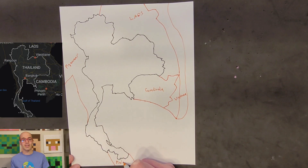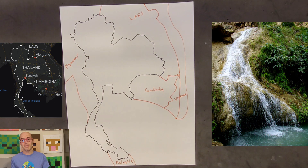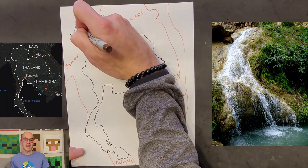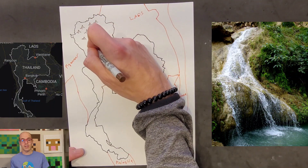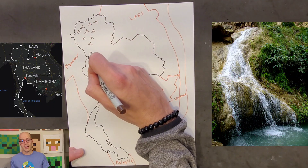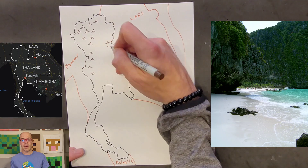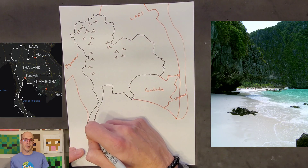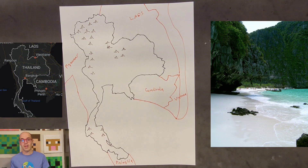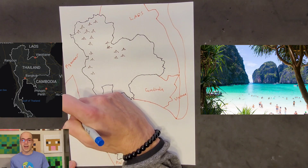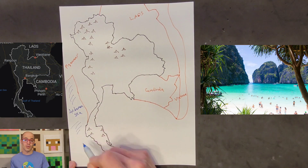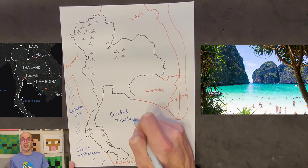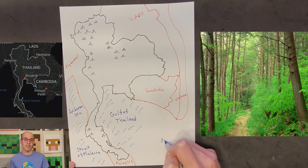In the north, the rugged terrain of the Thai highlands, including the mountain ranges of the Shan Hills and the Daen Lao range, dominate the landscape. In the south, Thailand's geography is defined by its stunning coastline, which stretches over 3,000 kilometers along the Gulf of Thailand to the east and the Andaman Sea to the west. Here, you'll find picturesque beaches, coral reefs, and limestone cliffs, making it a paradise for beach lovers and divers alike.